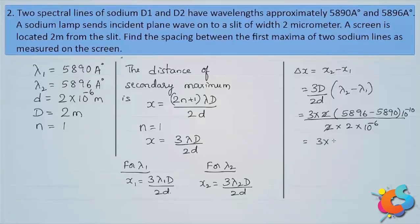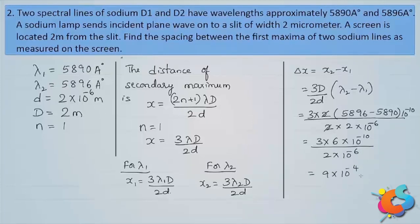With 3×6 = 18 in the numerator and 2×10⁻⁶ in the denominator, Δx = 9×10⁻⁴ meter, or 0.9 millimeter. This is the spacing between the first maxima of the two sodium lines on the screen.